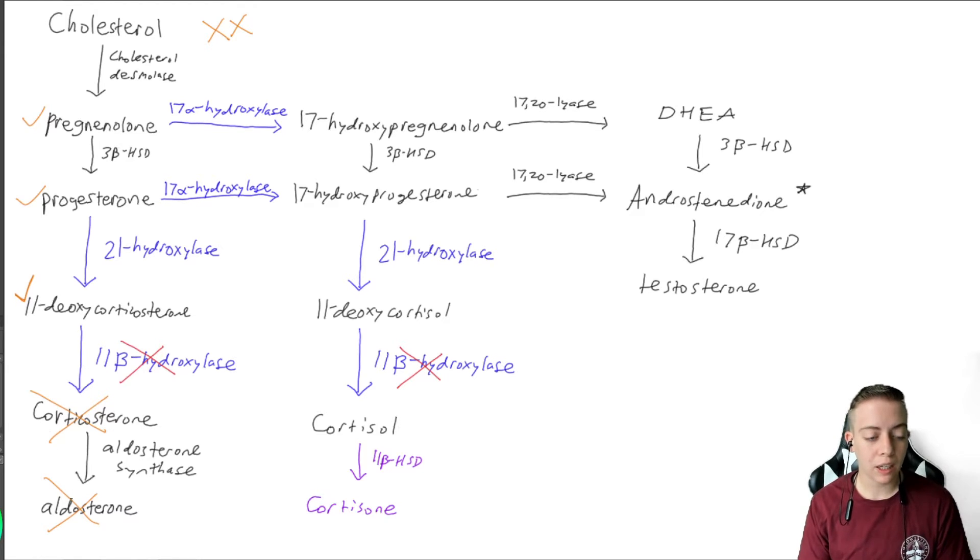As I described last time, if we cannot move forward in the pathway, we're going to go backwards. It's going to back up. So we're going to have an increase in 11-deoxycorticosterone. We're going to have an increase in progesterone, increase in pregnenolone. These are going to spill over, and it's going to now favor the 17-alpha-hydroxylase pathway.